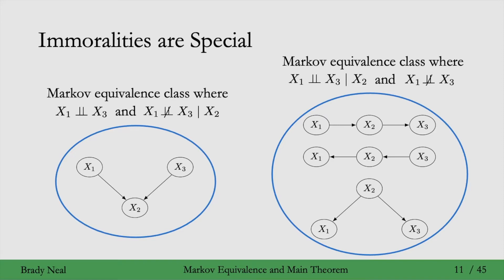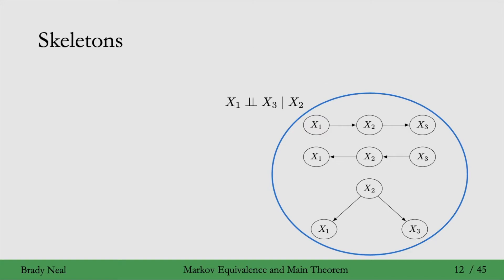If we figure out the Markov equivalence class and the true graph is the basic immorality, we can actually identify the full graph, because there's only one graph in that class. But if the true graph is a chain or fork, all we know is that it's one of those three graphs. Chains and forks also tell us useful information through skeletons — the undirected version of the graph. The skeleton encodes which conditional independencies hold, distinguishing it from graphs with additional edges.